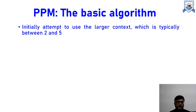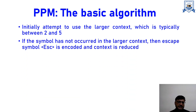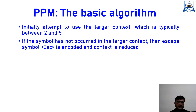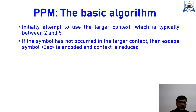We will see this with an example. Initially we start with the largest context, which is typically between 2 and 5. If the symbol has not occurred in the largest context, we encode the escape symbol and reduce the context. For example, if we start from context order 2 and the symbol is not in that second order context, we encode the escape symbol and reduce the context to 1. If not present in first order context either, we reduce again.